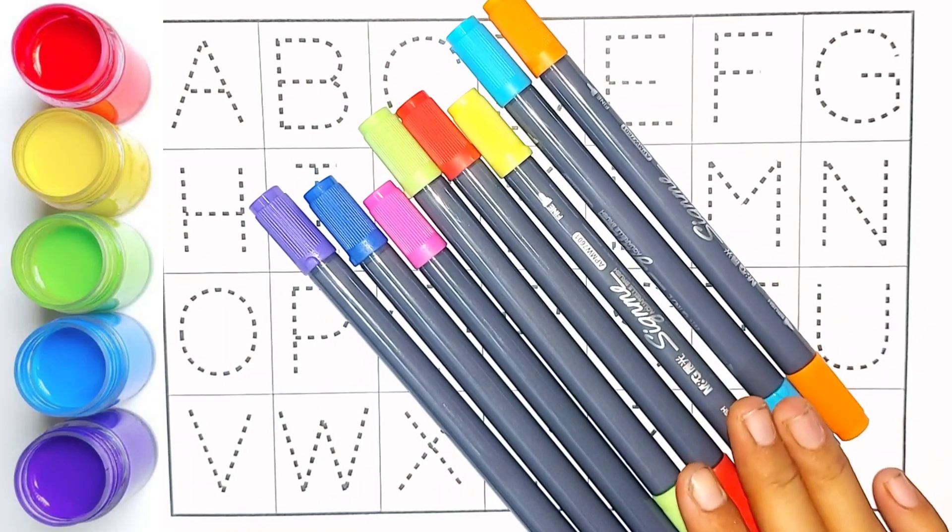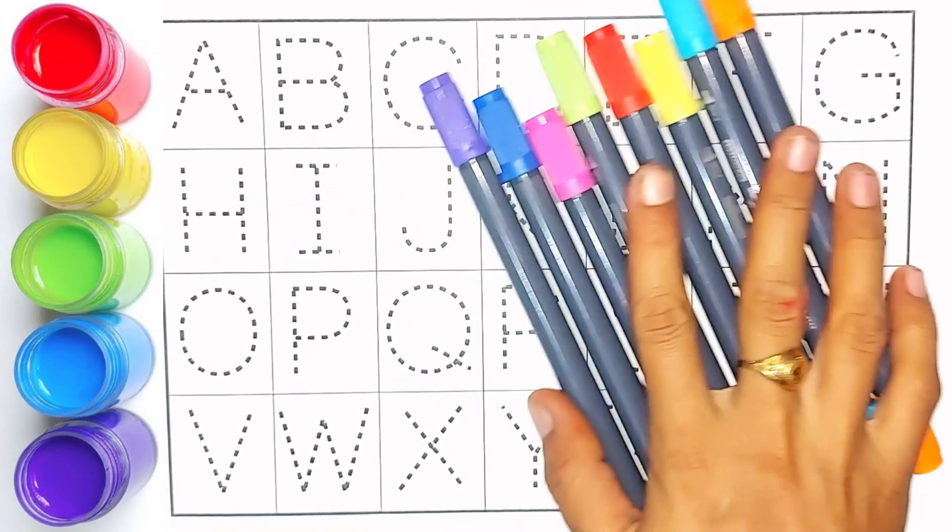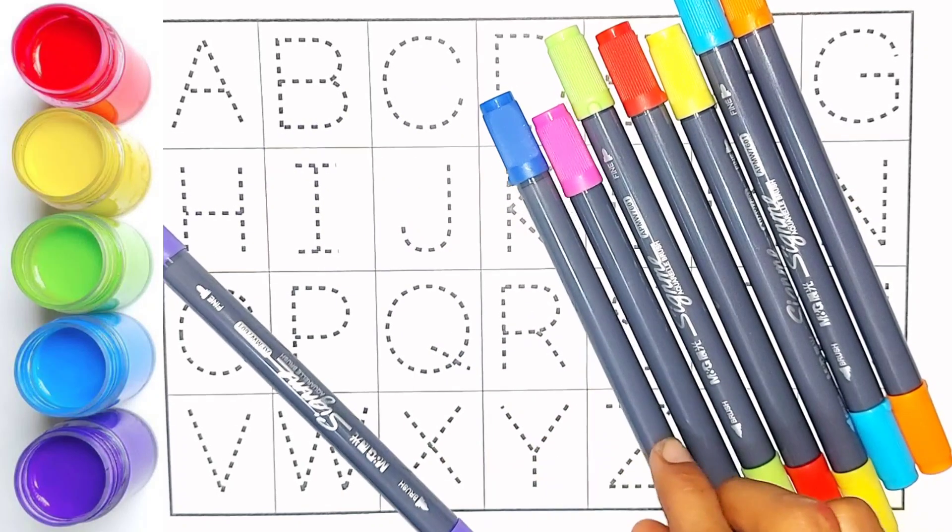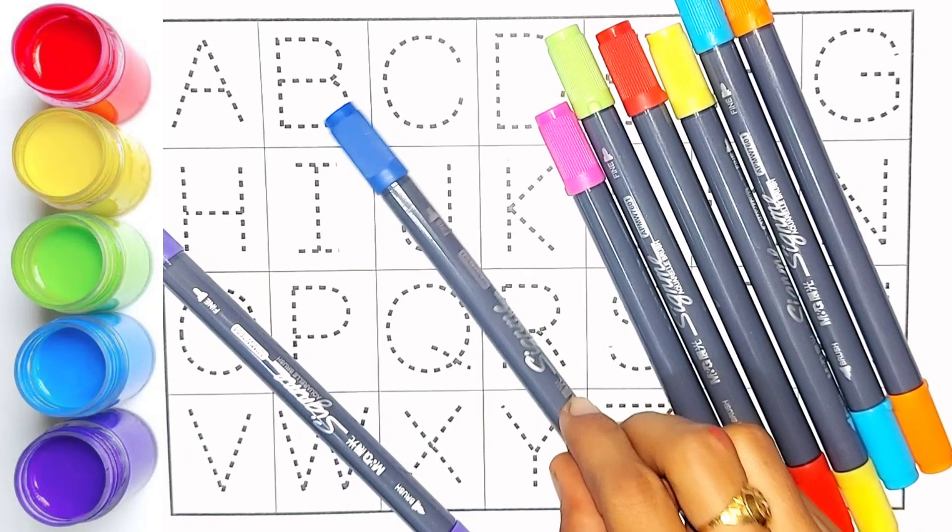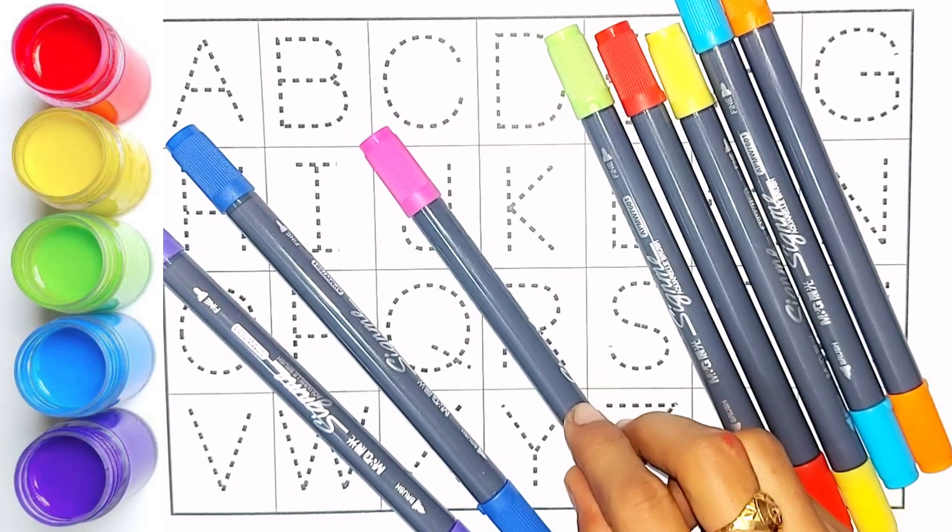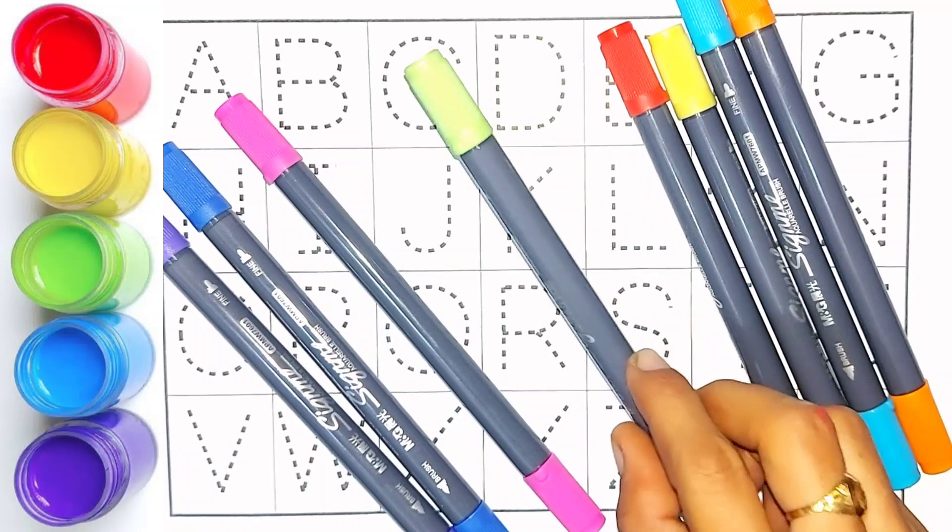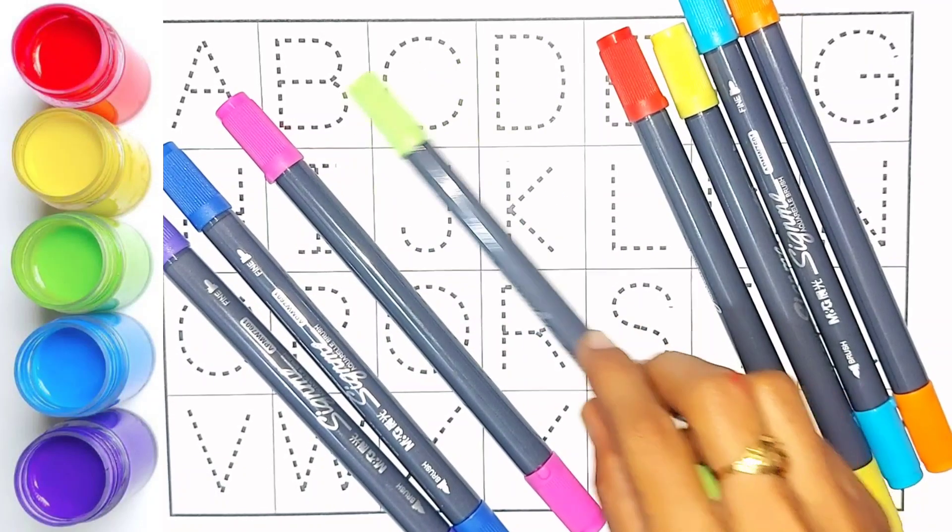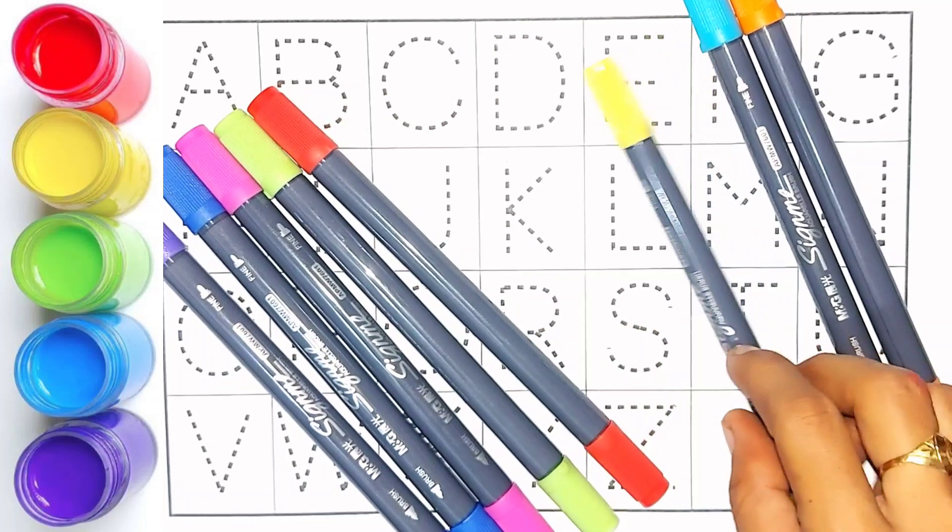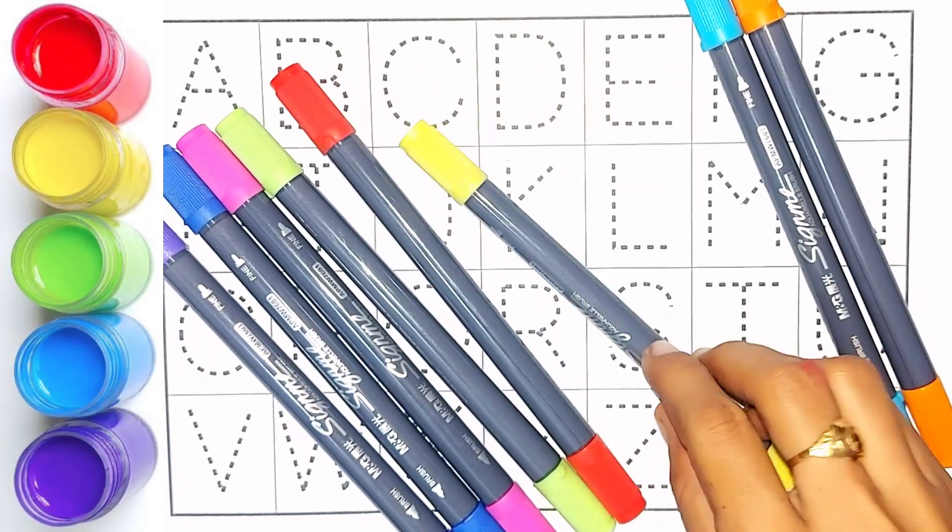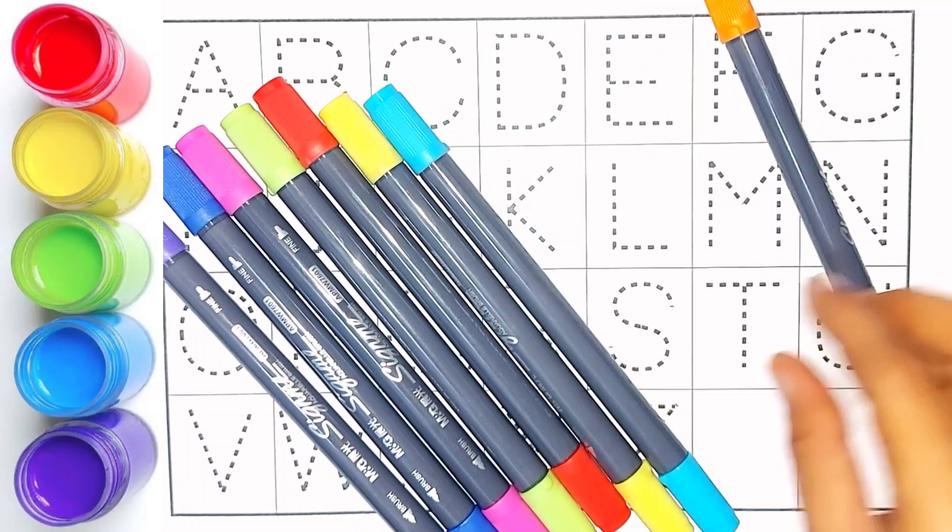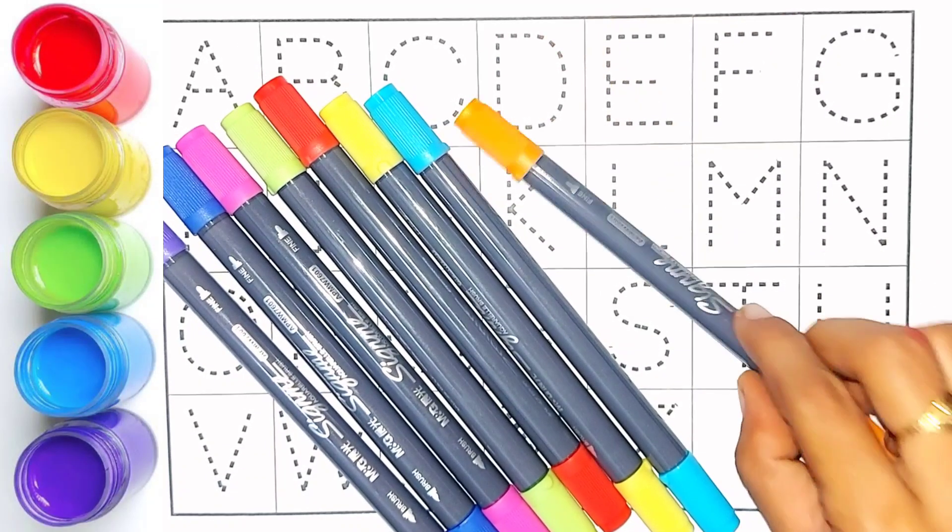Let's learn some colors. Violet color, violet color. Dark blue color, dark blue color. Pink color, pink color. Light green color, light green color. Red color, red color. Yellow color, yellow color. Sky blue color, sky blue color. Orange color, orange color.